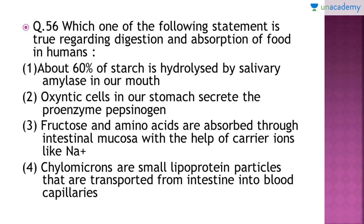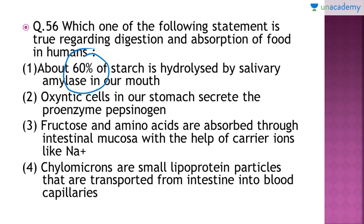Question number 56: Which one of the following statements is true regarding digestion and absorption of food in humans? The right answer is option number three — fructose and amino acids are absorbed through the intestinal mucosa with the help of carrier ions like sodium (Na⁺). Option one, that about 60% of starch is hydrolyzed by salivary amylase in the mouth, is wrong — only 10 to 20% of starch is digested there; the rest is digested in the small intestine.